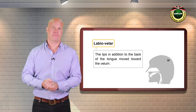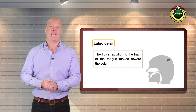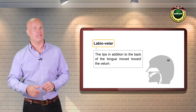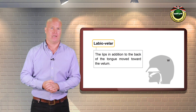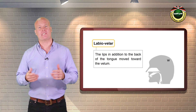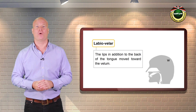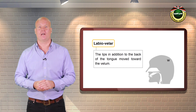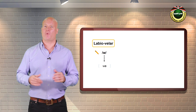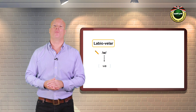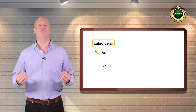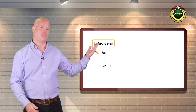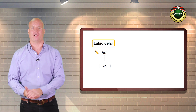Labiovelar. English contains only one labiovelar sound. It is the voiced sound at the beginning of the word we. Notice that when you produce w, the lips in addition to the back of the tongue move towards the velum, as illustrated in the diagram.